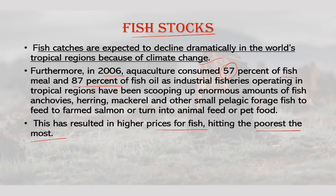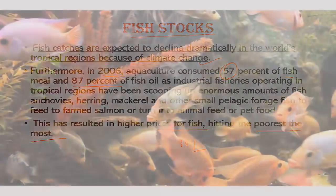The UN's Third Global Biodiversity Outlook report mentioned that about 80% of world marine fish stocks for which assessment information is available are fully exploited or overexploited. At the current rate of loss, it is feared that oceans may never recover again. Extensive coastal pollution, climate change, overfishing and the enormously wasteful practice of deep-sea trawling are all contributing to the problem.